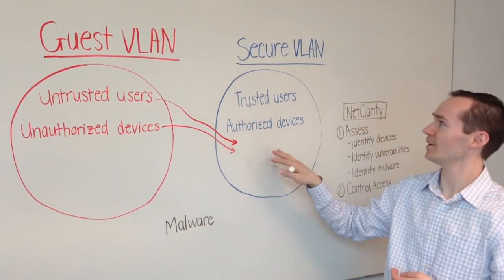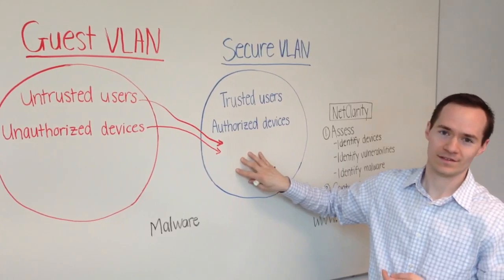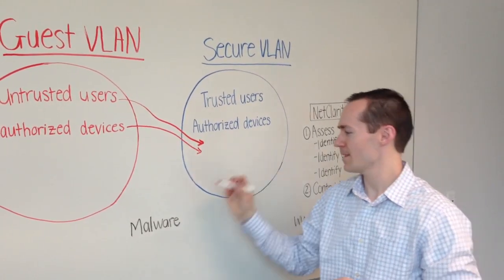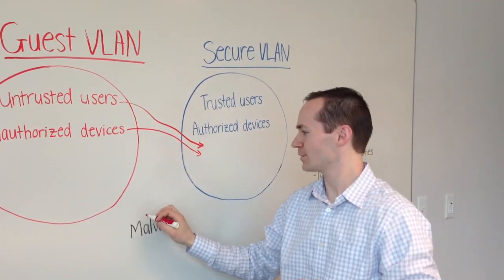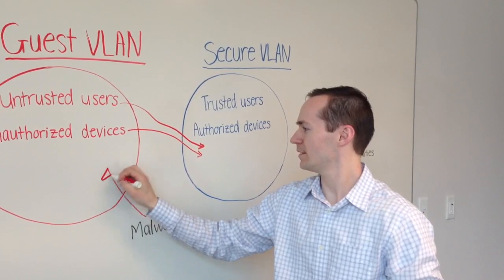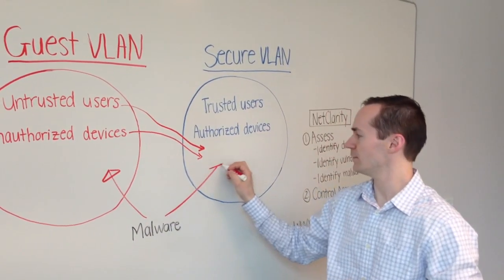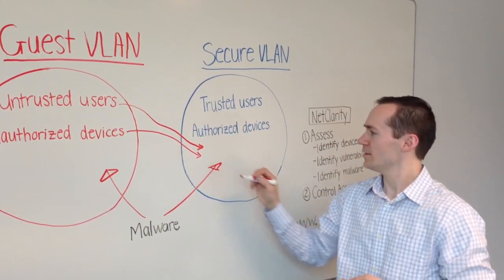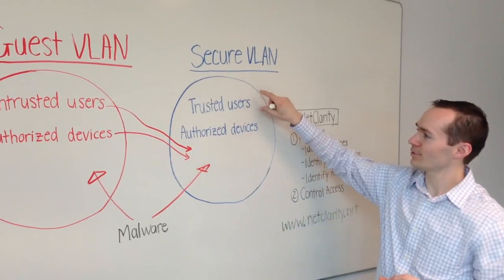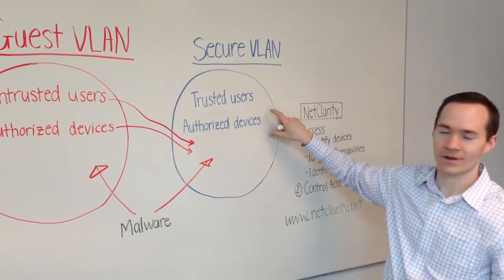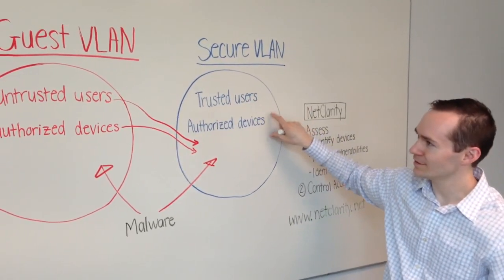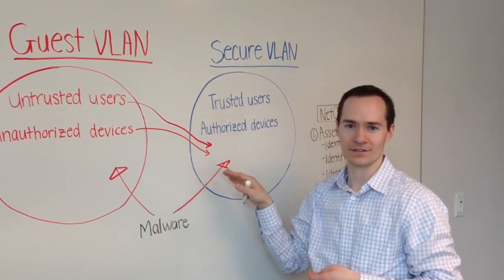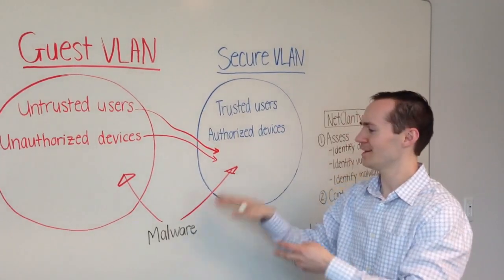And finally, malware unfortunately tends to infect both sides of the fence here. So what you have now is a network with trusted users, authorized devices, untrusted users, unauthorized devices, and malware all mixed together.